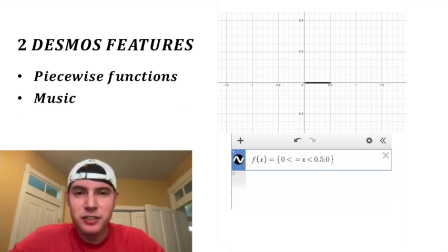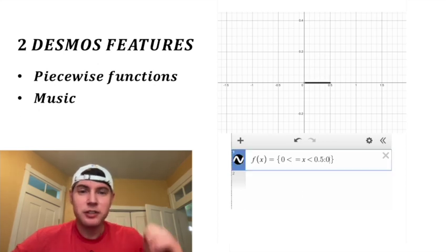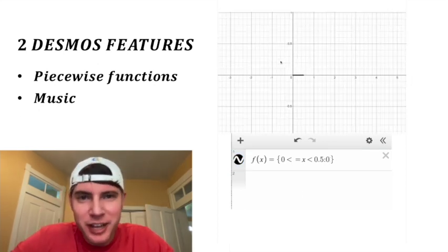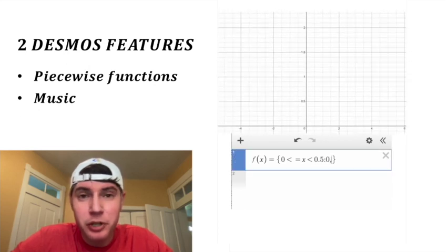Let's do zero. And you can see it gives us the line f of x equals zero defined between zero and 0.5. And now to do the next piece of the piecewise function, we're going to put in a comma.